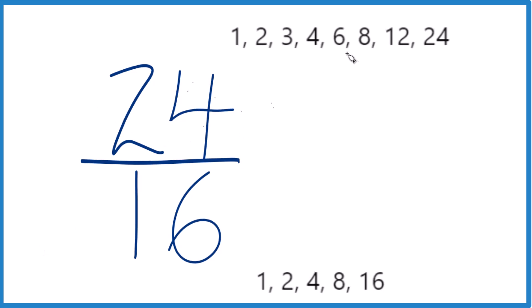So it looks like the greatest factor, 1, 2, 4 goes into both of them, 8, 16 doesn't. So 8, that's the greatest common factor.